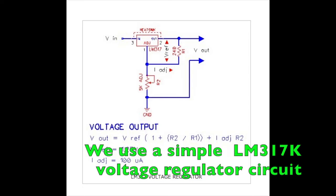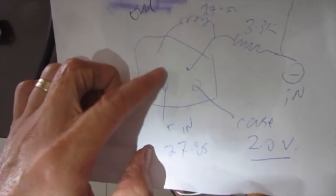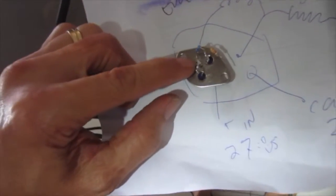We use a simple 317k voltage regulator circuit. So here we have a 317k voltage regulator circuit set up.